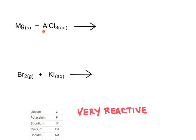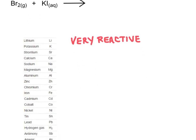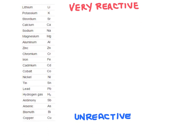Not every single displacement reaction will occur — magnesium may not be reactive enough to switch places with aluminum. Since aluminum has already reacted with chloride, magnesium needs to be more reactive than aluminum to bump it out. We use something called the activity series of metals, which ranks metals from unreactive at the bottom to very reactive at the top.